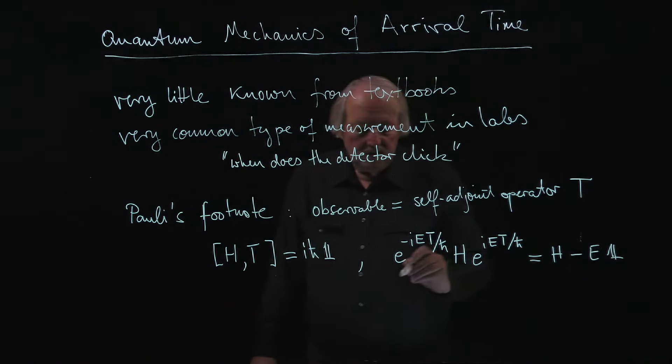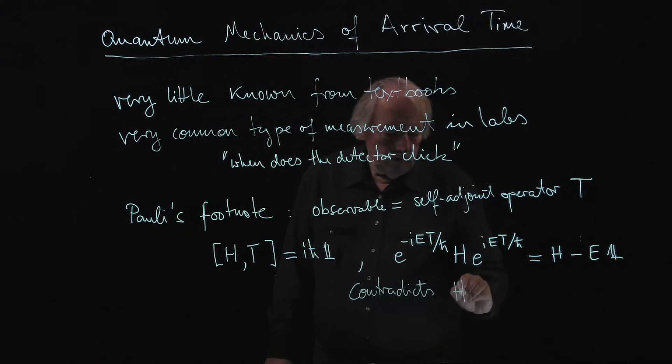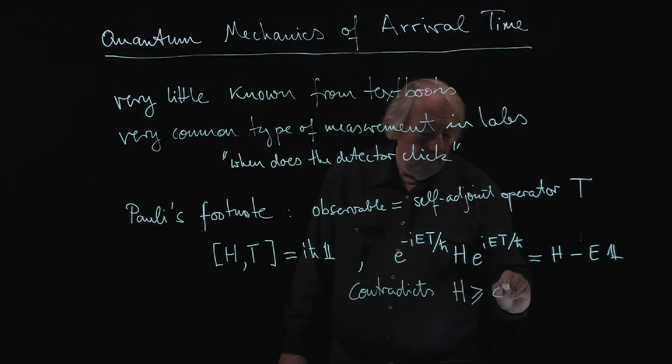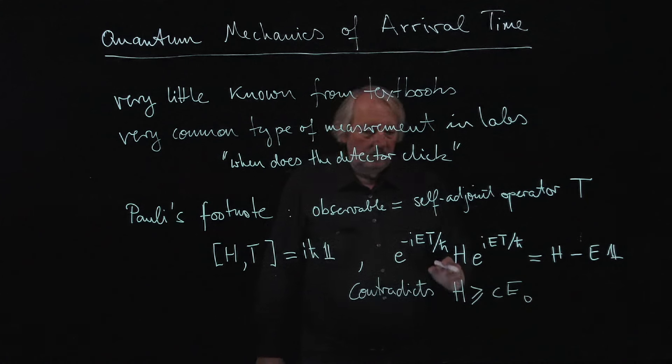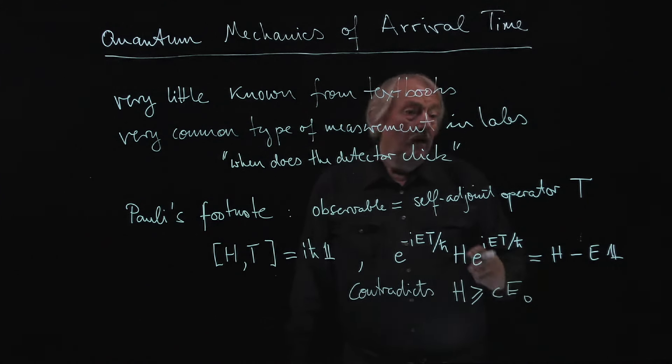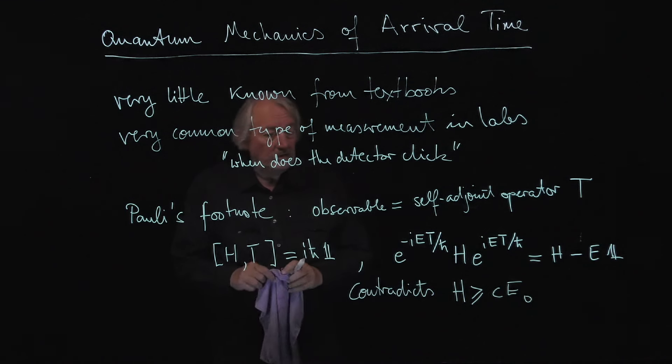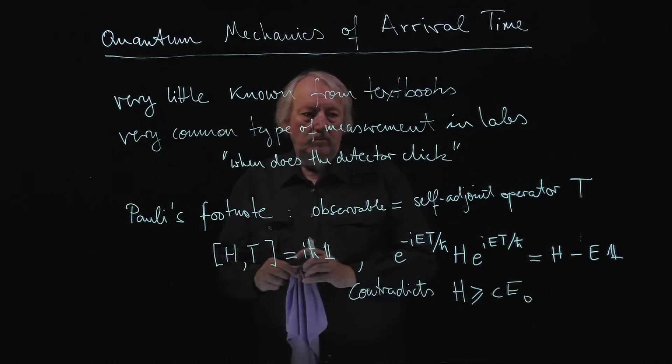This contradicts what we usually have, that H is positive or larger than some constant times a ground state energy. If the Hamiltonian has a ground state energy, which most of them definitely have, the physical ones, then this is not possible. So that's Pauli's argument.